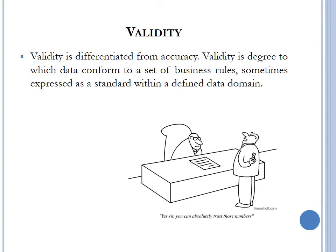Validity is different from accuracy. It is the degree to which data conforms to a set of business rules, sometimes expressed as a standard within a defined data domain. An example: all tax registration numbers must be a length of 9 digits — a TRN with 12 or 7 digits would be considered invalid. It is important to note that a value can be valid but inaccurate. A TRN number with 9 digits is considered valid; however, if it does not accurately represent the person's actual TRN, it is still inaccurate.